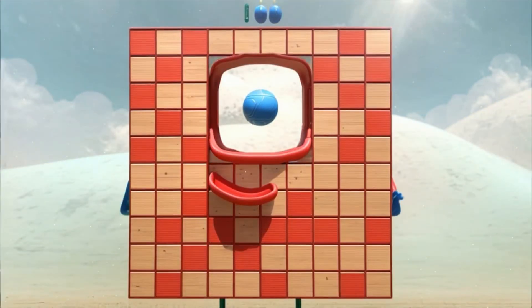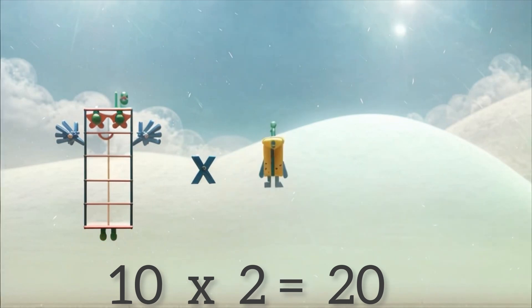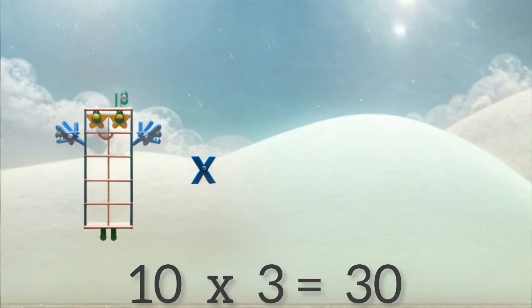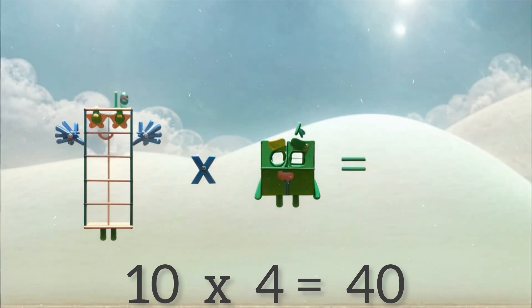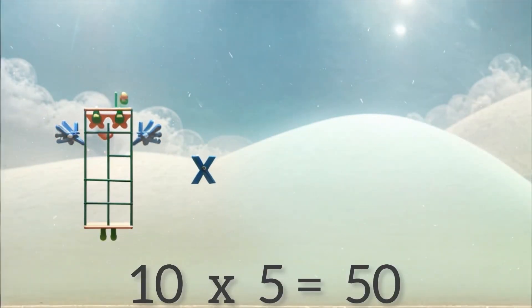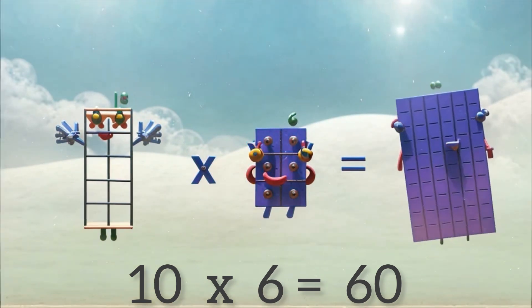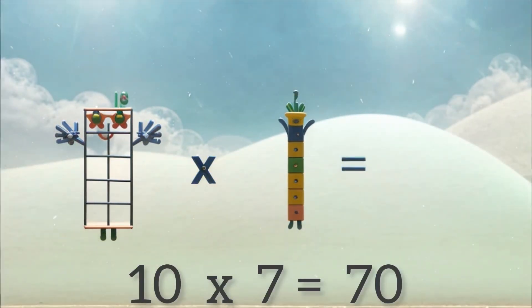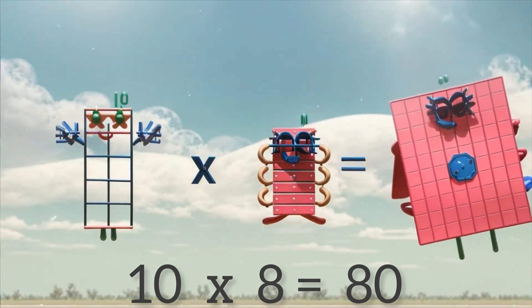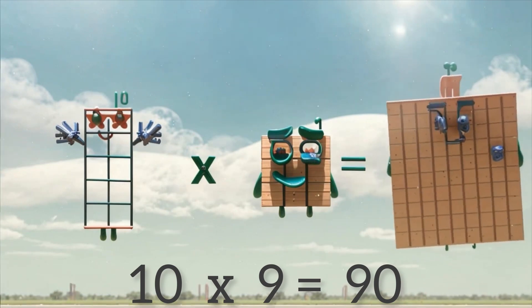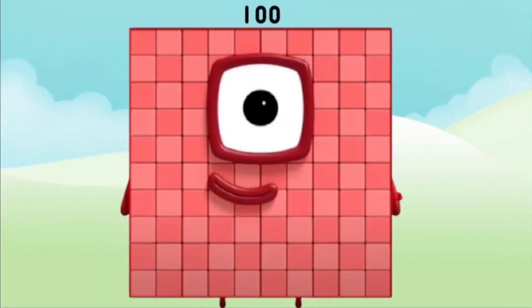10 is 100. 10 times 1 equals 10. 10 times 2 equals 20. 10 times 3 equals 30. 10 times 4 equals 40. 10 times 5 equals 50. 10 times 6 equals 60. 10 times 7 equals 70. 10 times 8 equals 80. 10 times 9 equals 90. 10 times 10 equals 100.